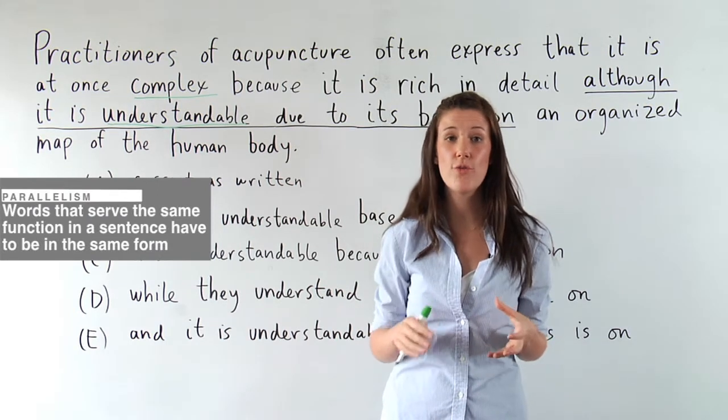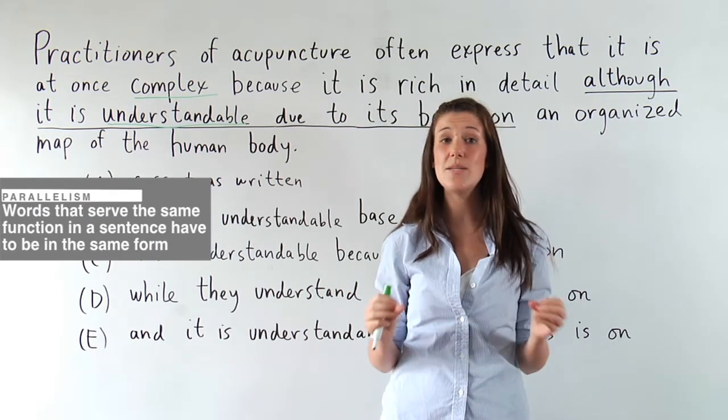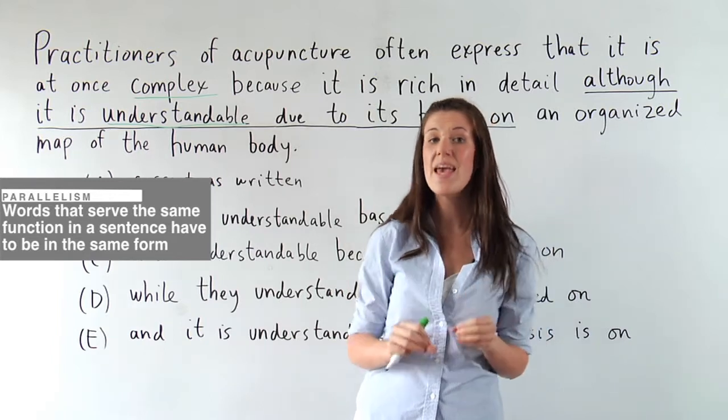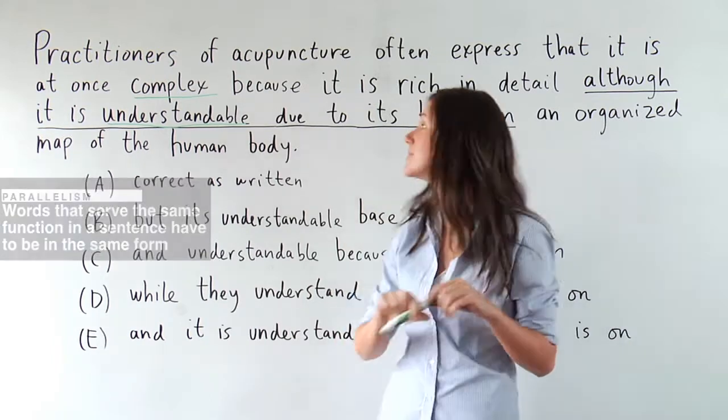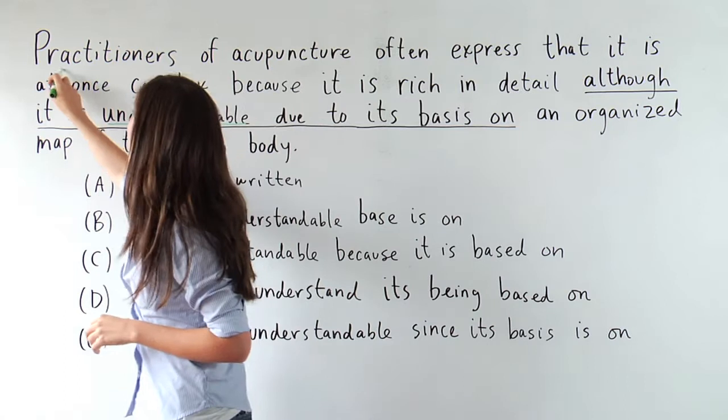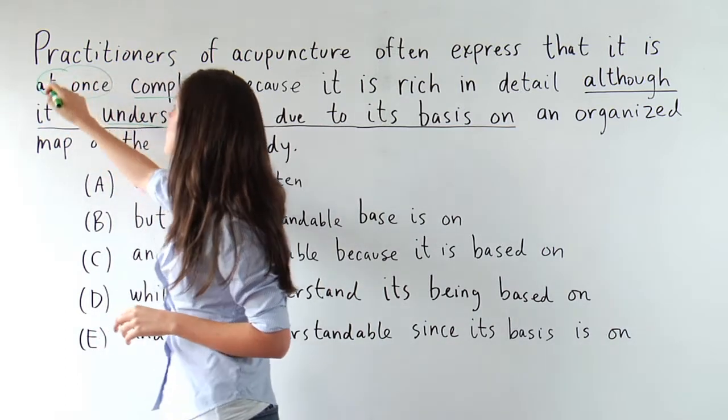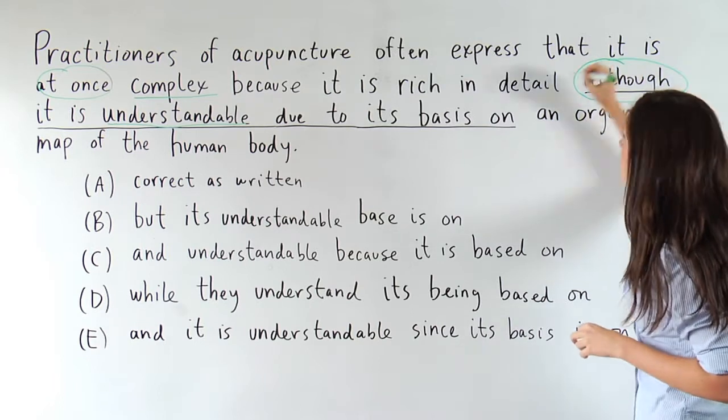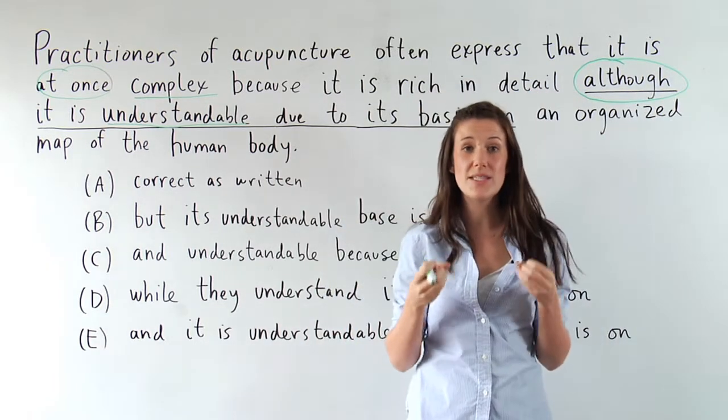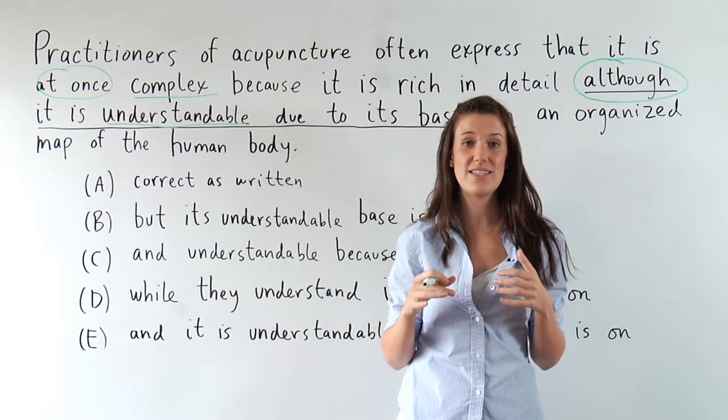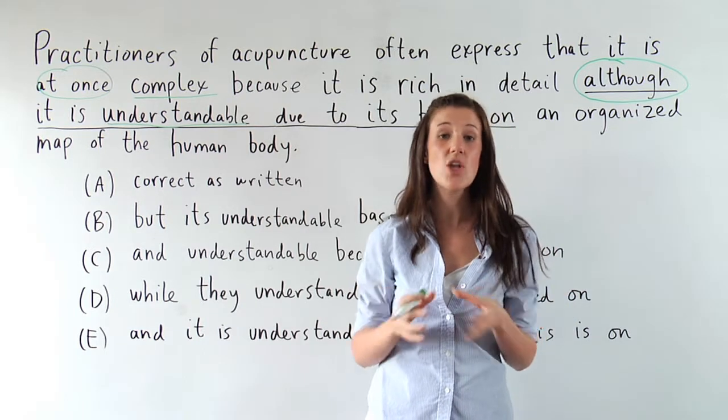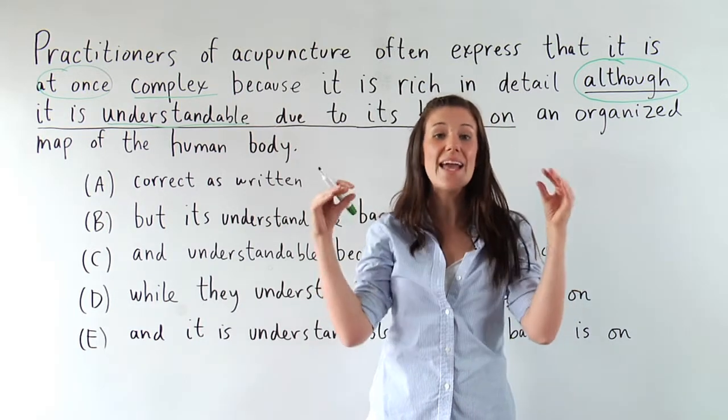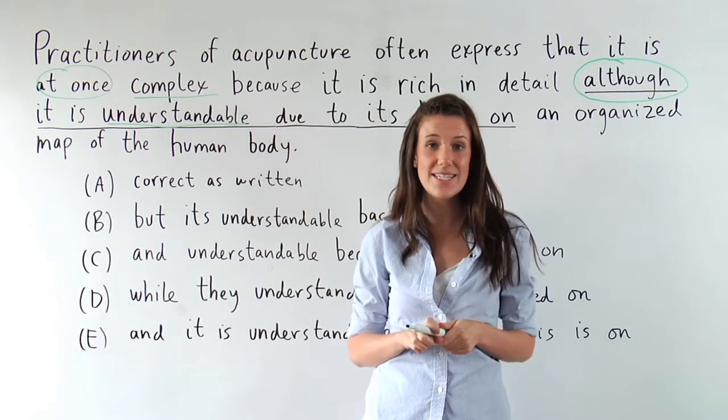Now, another clue I can look for to tell me that these ideas need to be in the same grammatical form is what's called connector buddies. So I see this at once, and this although. That tells me that we've got multiple elements of the sentence that need to function in the same way. And connector buddies are words that do just that - they connect two parts of a sentence.